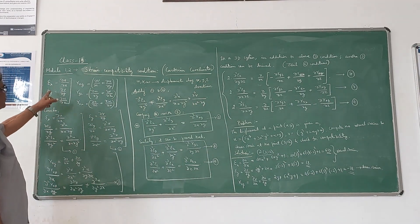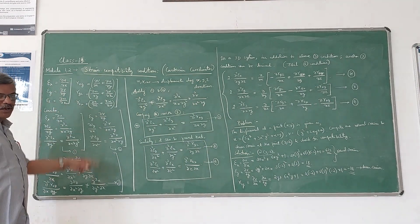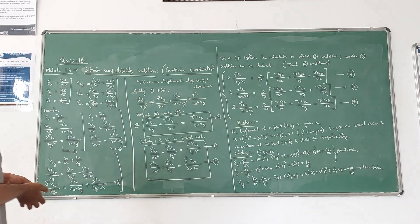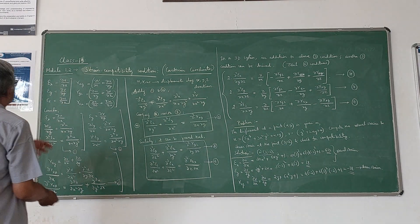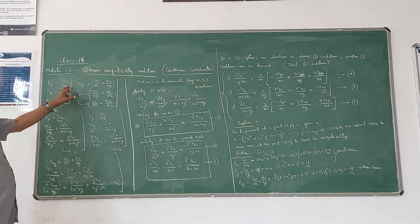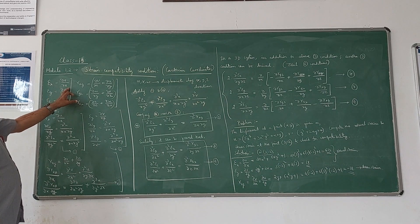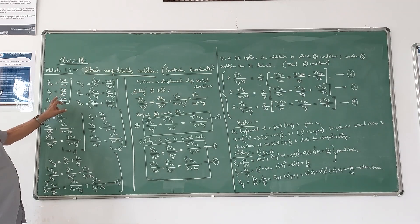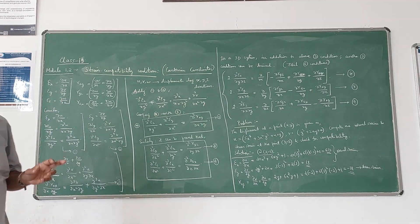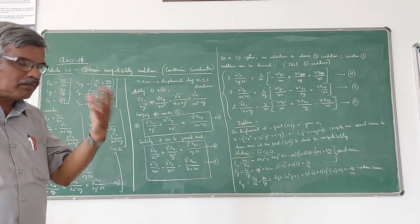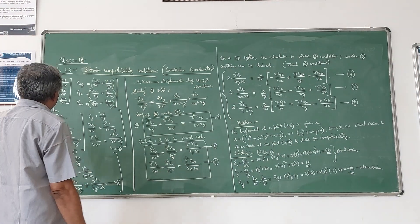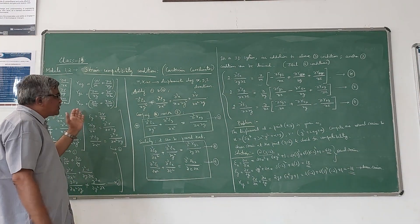If you know U, V, W — the displacements along X, Y, Z directions — you can always find out the strain components, six strain components in a three-dimensional strain system. Epsilon X is given by dou U by dou X, Epsilon Y is given by dou V by dou Y, Epsilon Z is given by dou W by dou Z. These are called the normal strain components which act along X, Y, Z directions.